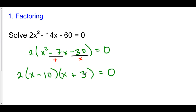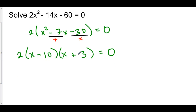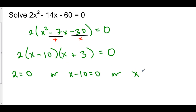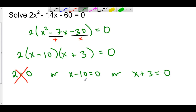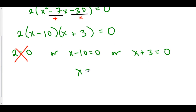The two numbers that multiply to negative 30 and add to negative 7 are negative 10 and positive 3, because negative 10 times positive 3 is negative 30 and negative 10 plus positive 3 is negative 7. Now that we've factored this, when we have three things being multiplied together equaling zero, one or all must equal zero. Two is not zero, so either x minus 10 equals zero or x plus 3 equals zero, meaning x equals 10 or x equals negative 3.